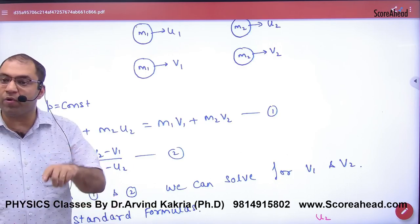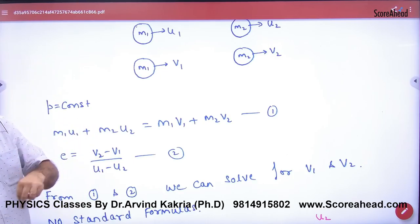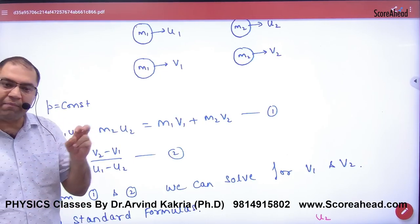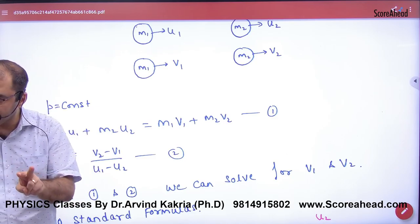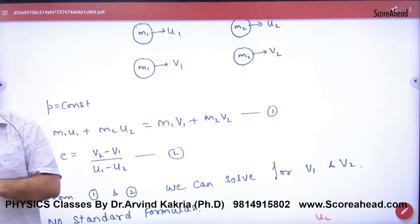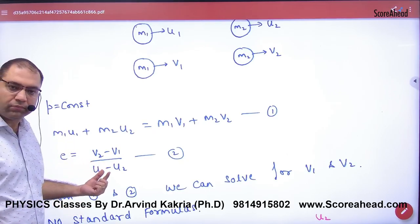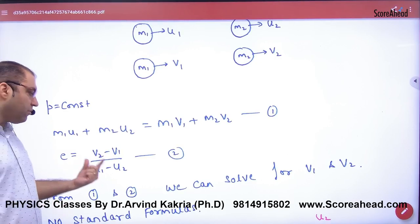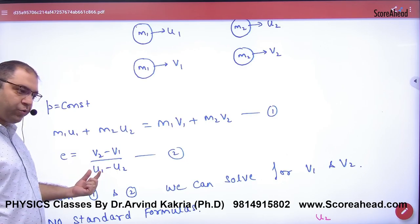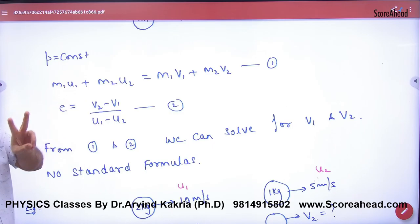Because there is no energy equation in this, the second equation is needed because V1 and V2 are two variables, and for two variables you need two equations. Energy will not be conserved because there is inelastic collision and energy loss, so the other equation comes from restitution. The restitution formula is V2 minus V1 by U1 minus U2.